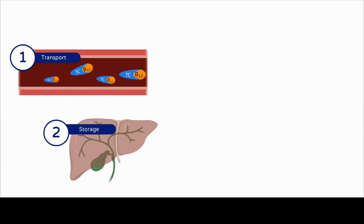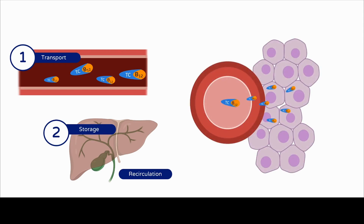Once B12 is absorbed, it's transported to the liver where most of it is stored. Some is secreted back into the gut and needs to be reabsorbed — this is called enterohepatic recirculation. This is a problem in people who don't absorb B12 well, because not only do they fail to absorb it from meals, but they also fail to reabsorb it when it's recirculated. The remaining fraction travels through the bloodstream, crosses capillary membranes, and enters cells via receptor-mediated endocytosis — making the uptake and disposition of this vitamin very complex.